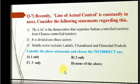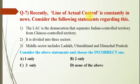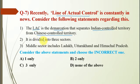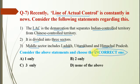Question number 7: The Line of Actual Control (LAC) is constantly in the news. Statement 1: The LAC is the demarcation that separates Indian-controlled territory from Chinese-controlled territory. Statement 2: It is divided into three sectors. Statement 3: The middle sector includes Ladakh, Uttarakhand and Himachal Pradesh. We have to find the incorrect statement.